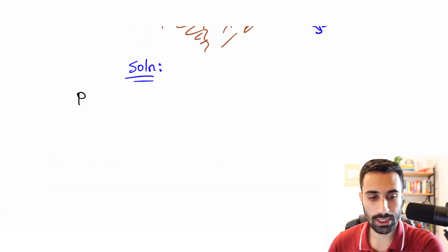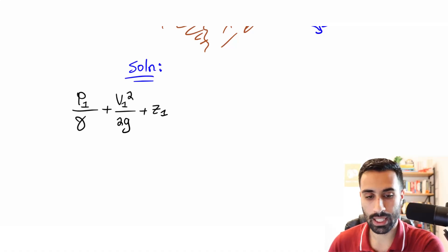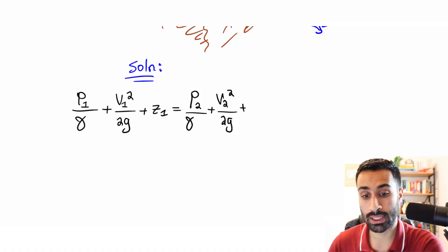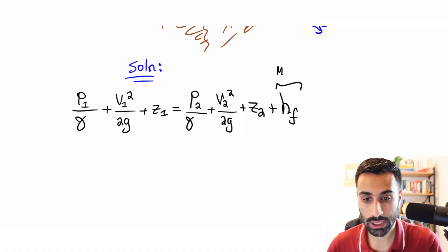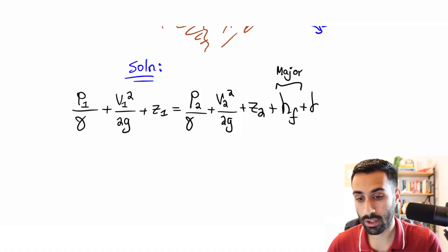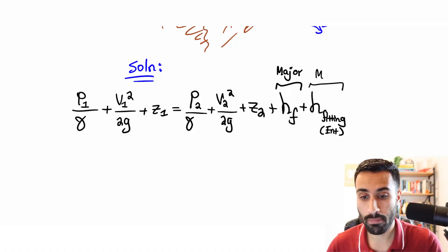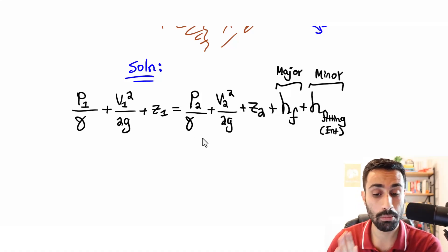Let's write that down: P1/γ + V1²/2g + Z1 = P2/γ + V2²/2g + Z2 + h_f + h_fitting. The major head loss is due to flow via Darcy-Weisbach, and the minor head loss is due to the entrance fitting. Both loss terms are always on the right side of the Bernoulli equation. Now we have point 1 and point 2 — where do we place these on the diagram?